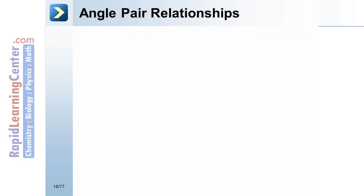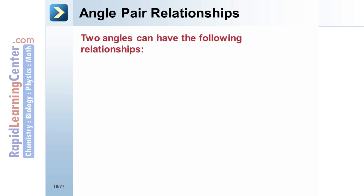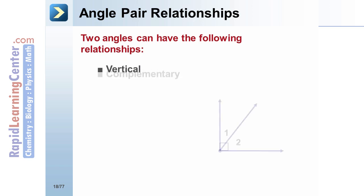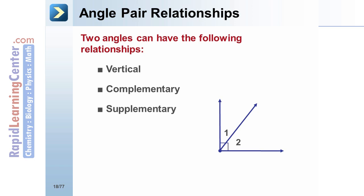Angle Pair Relationships. Two angles can have the following relationships: vertical, complementary, supplementary, and adjacent.